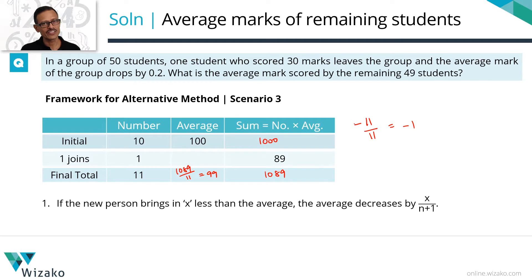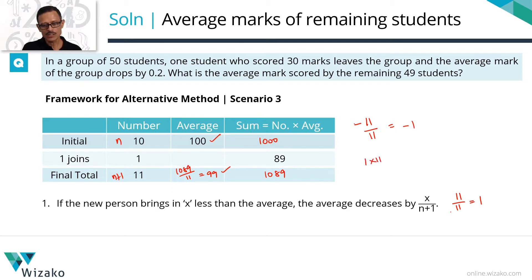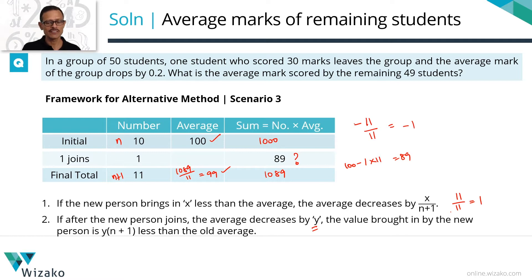If the new person brings in x less than the average, the average goes down by x/(n+1). Conversely, if the average decreases by y after the new person joins, the new person brought in y times (n+1) less than the old average. In this example: the average went down by 1 for 11 people, so this person brought in 1 times 11 equals $11 less than the old average, meaning they brought in $89.